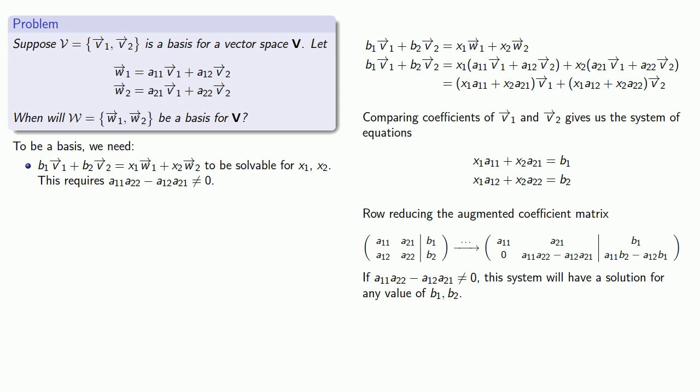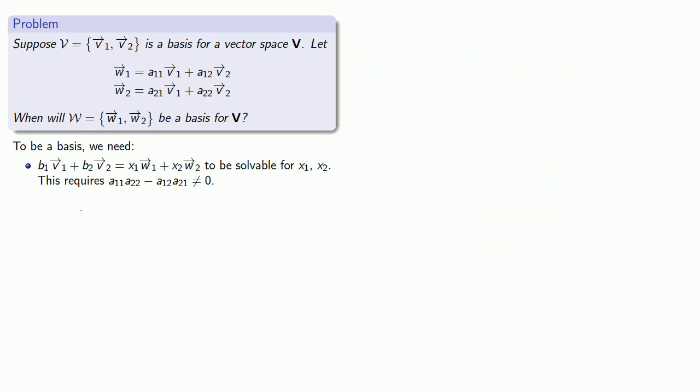Because meeting this condition is all we need, a mathematician would say that this condition is sufficient for W to span V. So this guarantees that the set of vectors W spans our vector space. But in order to be a basis, we also need to make sure that the vectors are independent. So how can we do that?